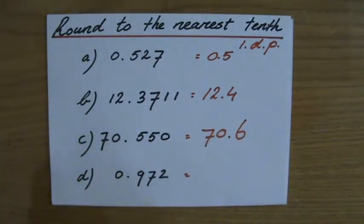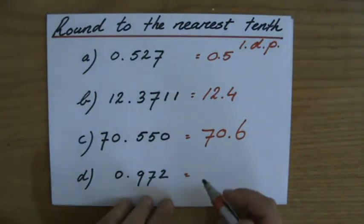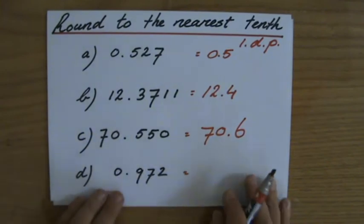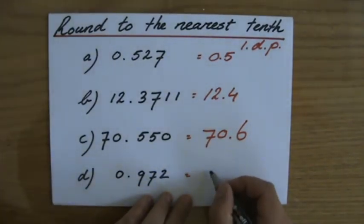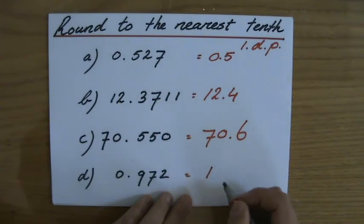And the last one, one decimal place, so the nine. And the nine either goes up to a ten or it stays a nine, and it depends on the next one, which is a seven. So the nine does go up. And now be careful, the nine goes to a ten, so you carry the one of the ten to the next place value. So to one decimal place, this is one point zero.